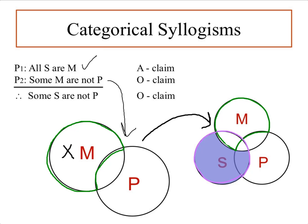So the only way to accurately diagram the second premise is by putting the X on the line, which satisfies the requirement of being in that green region — saying that M exists not in the P category — while remaining neutral with respect to S. This is the correct way to diagram this argument.